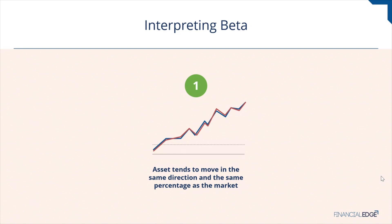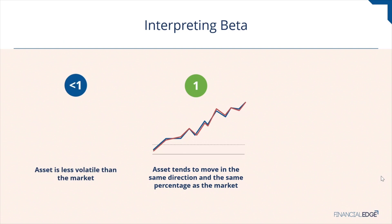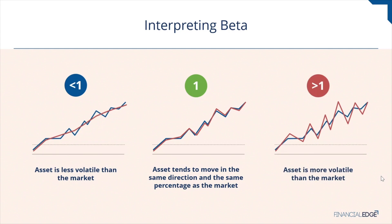The returns on a stock with a beta close to 1 will move with the market. The returns on a stock with beta less than 1 have less factor risk than the market, and vice versa for a stock with a beta greater than 1. Beta and correlation are related: correlation indicates the strength of the linear relationship between a stock and the market, while beta tells you the change in response for a one-unit increase in the market or factor. Beta essentially standardizes price movements, putting them on the same scale, allowing you to compare the magnitude of market movements directly.